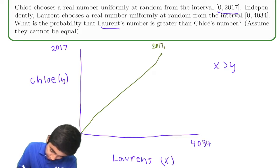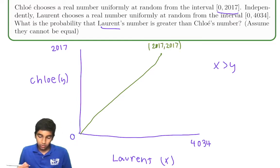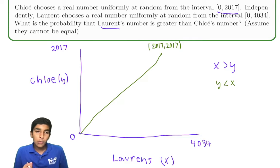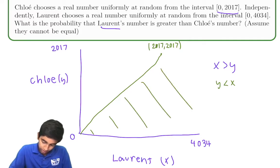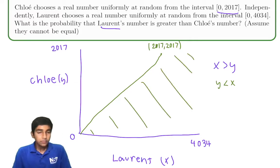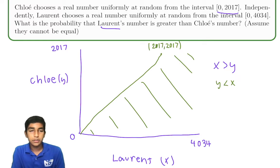Where this goes till 2017 comma 2017. What about x greater than y, or rather y less than x? y less than x, so it will be under. And under would be right here. Something like this over here. Okay. It's under.